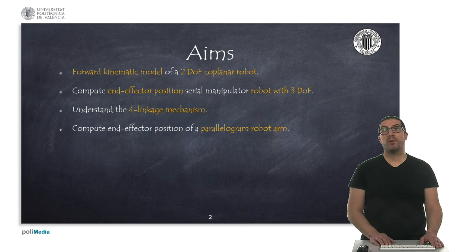Finally, we will see how to compute the position of the end effector of a parallelogram robot arm, which combines the structure of a three degrees of freedom serial robot with a forward linkage mechanism.